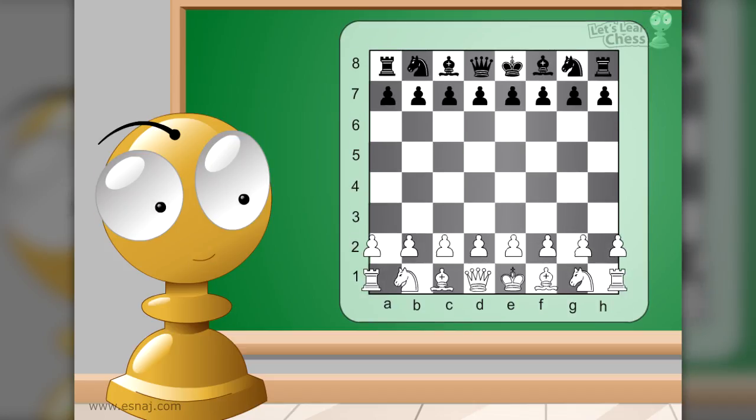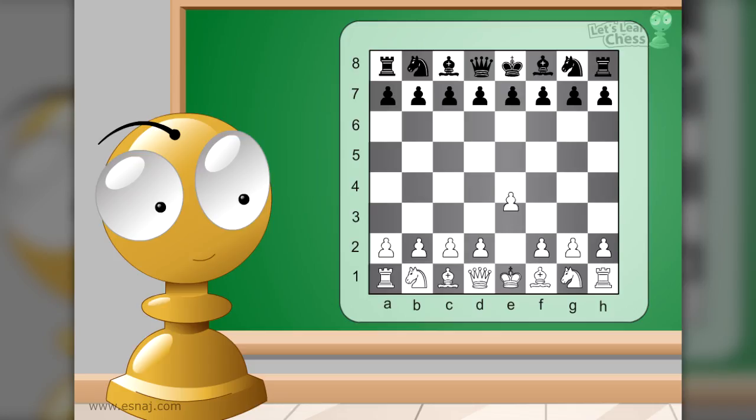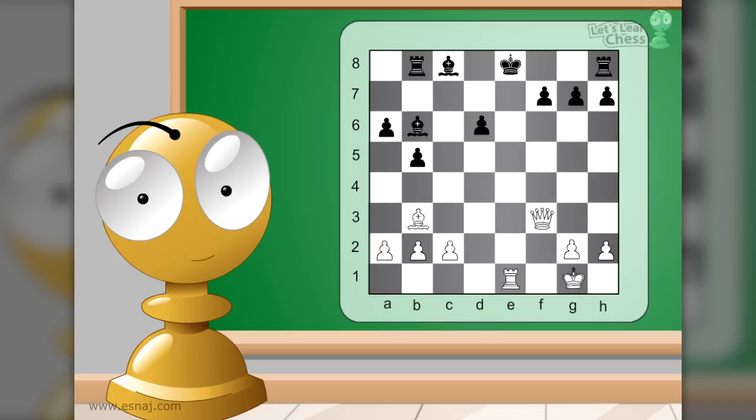In every game, white should make the first move. The objective is to capture the king. It doesn't matter if the other pieces are captured. Eat the opponent's king and you win the game. However, if yours is captured, you lose.